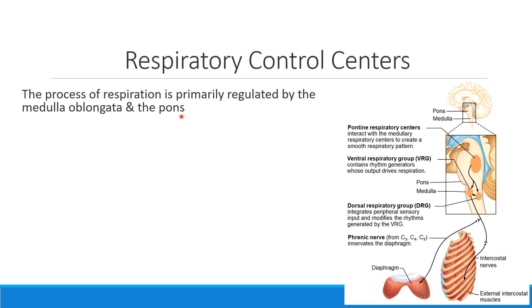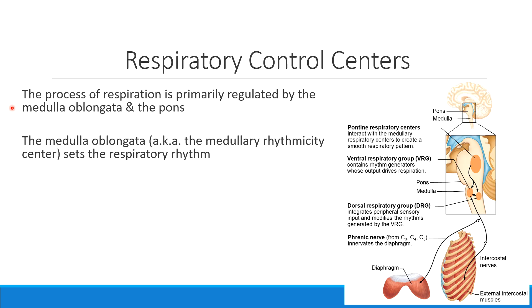If you remember from AMP1, the medulla oblongata and the pons are both found in the part of the brain called the brainstem. This is a part of your brain that is not consciously controlled. All of your conscious thoughts and processes occur in the cerebrum, that upper part of the brain. When thinking about the functions of the medulla oblongata and the pons in respiration, they do slightly different things.